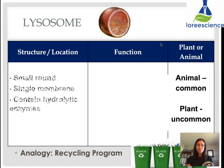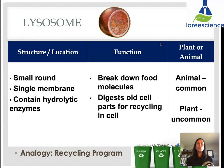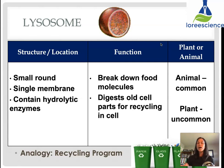Lysosomes are small, round, bubble-shaped organelles. They have a single membrane and contain hydrolytic enzymes — chemicals that break down other materials. They are used to break down food molecules that come in; if a molecule is too big, it needs to be broken down smaller so cells can use it. They also digest old cell parts that can then be recycled. In animals they are very common; they are not common in plants, though something like a Venus flytrap would have lysosomes. The analogy would be like a recycling program.